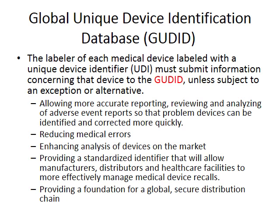The labeler of each medical device labeled with a UDI must submit information about that device to GUDID — the Global Unique Device Identification Database. Once a UDI is assigned to a device, the information is entered into this global database. When the device leaves the factory it is scanned, when it arrives at its destination it is scanned, and before it goes into a patient it is scanned — so everybody knows at each stage of the lifecycle exactly where the device is.